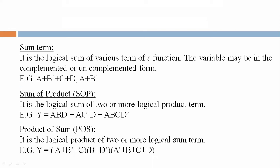Sum of product example: A into B into D plus A into C dash into D plus A into B into C into D dash. Product of sum example: Y equals (A plus B dash plus C) into (B plus D dash) into (A dash plus B plus C plus D).